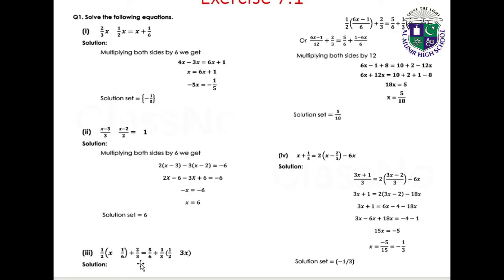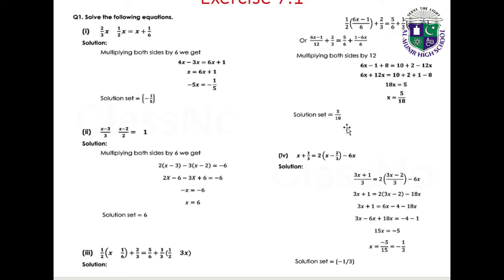Next part: 1/2(x minus 1/6) plus 2/3 equals 5/6 plus 1/2(1 minus 3x). This gives (6x minus 1)/12 plus 2/3 equals 5/6 plus (1 minus 6x)/6. Multiplying both sides by 12: 6x minus 1 plus 8 equals 10 plus 2 minus 12x, so 18x equals 5, giving x equals 5/18. Solution set: {5/18}.